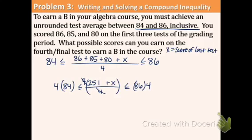One step more. In order to get the X by itself, we need to subtract 251 from all sides. Remember, we need to be equal to all. That means we have an X coming down, and the numbers we get on either side are 85 and 93.